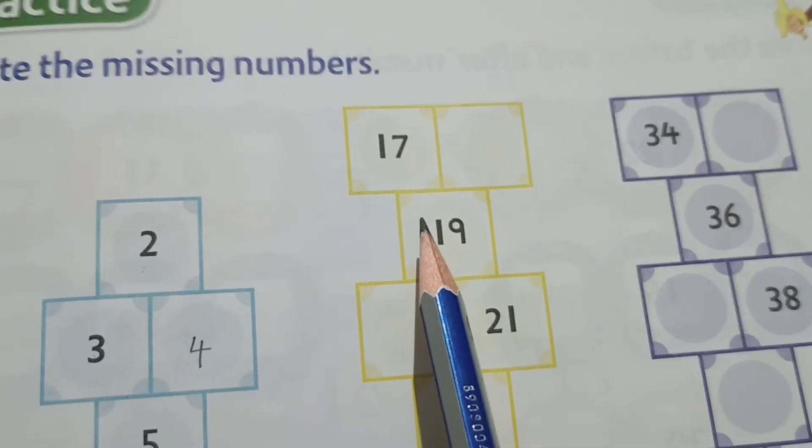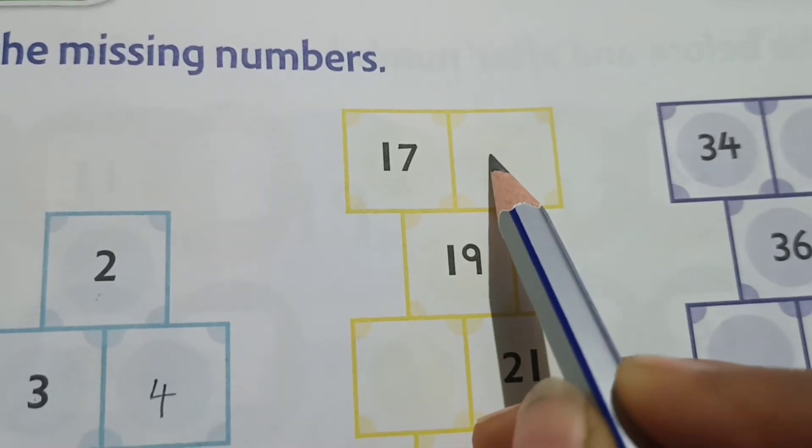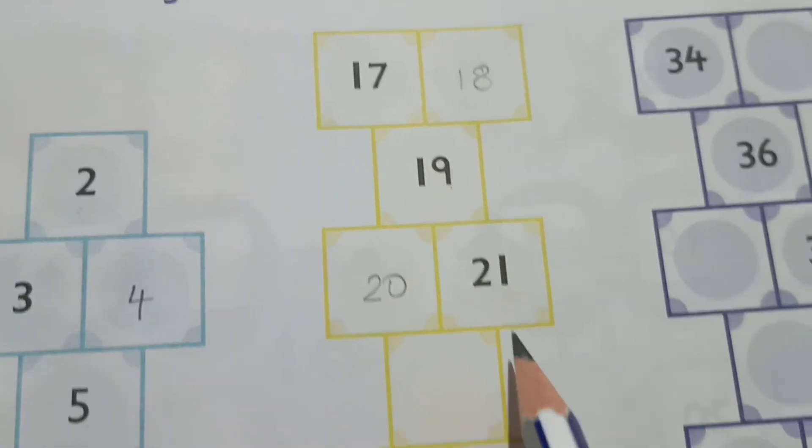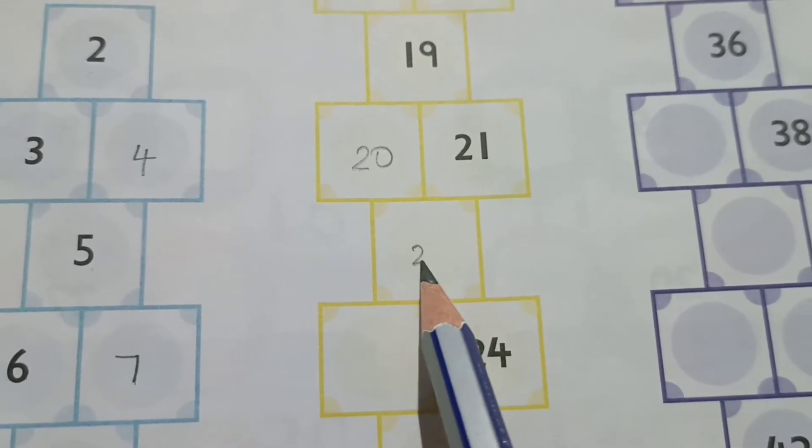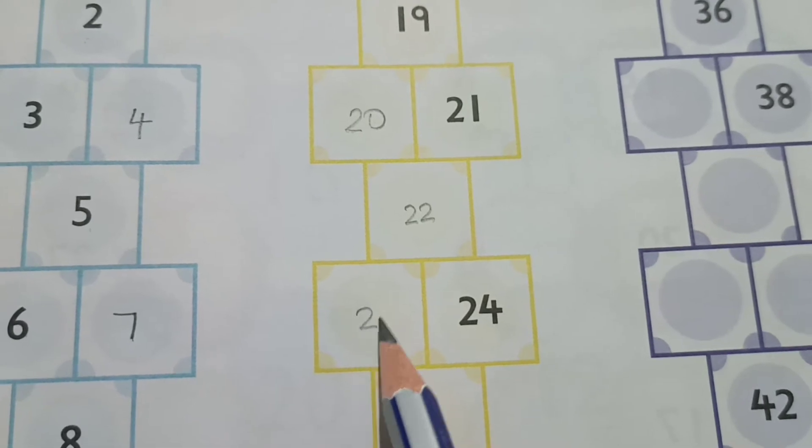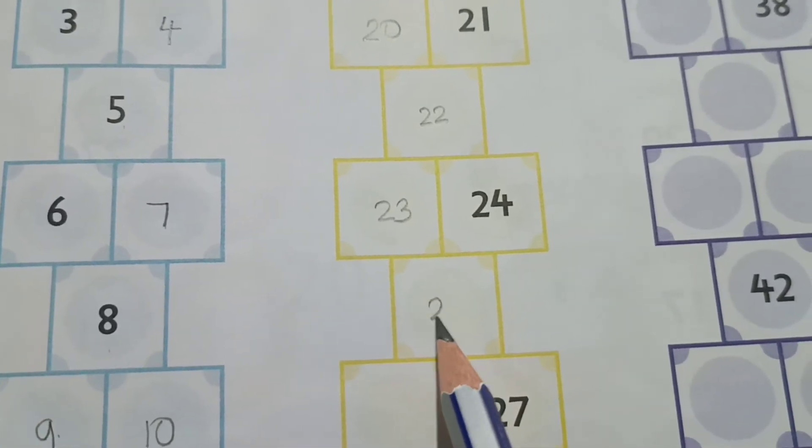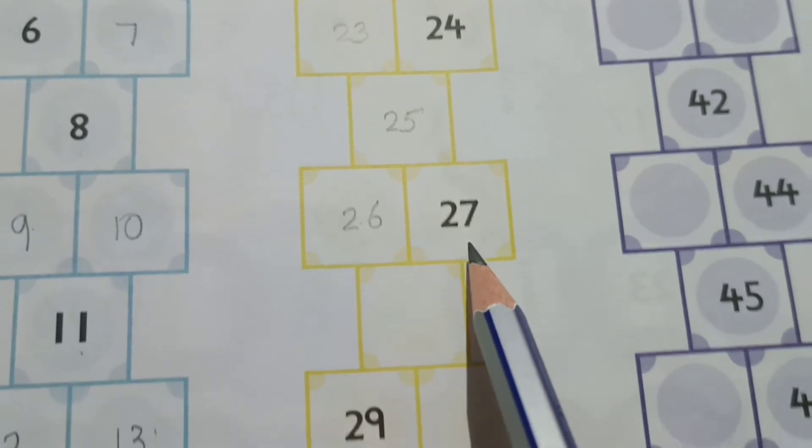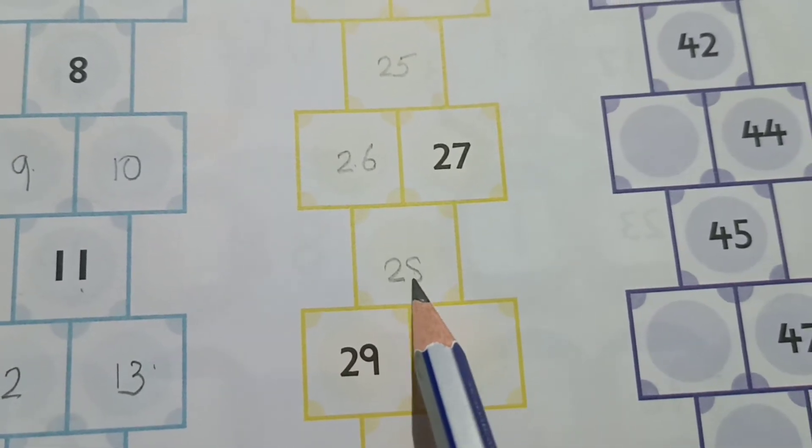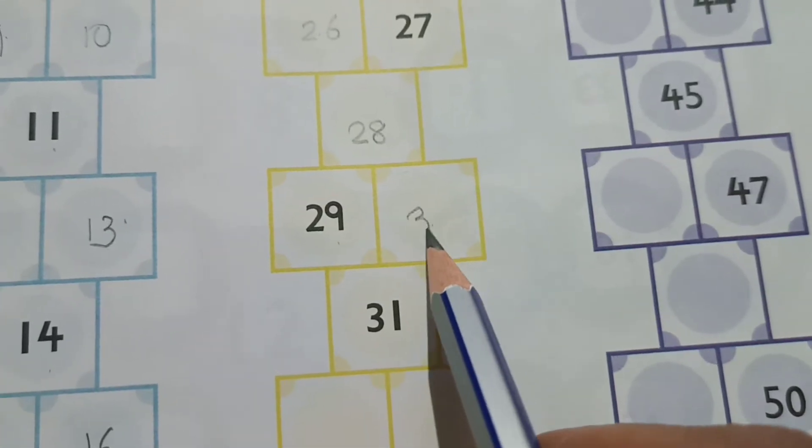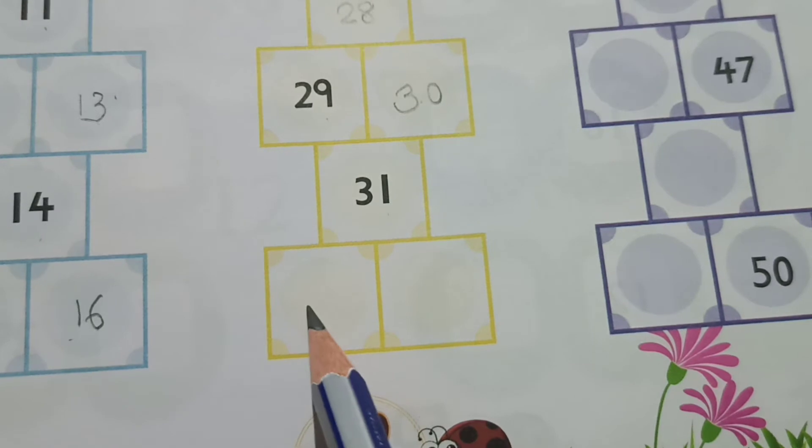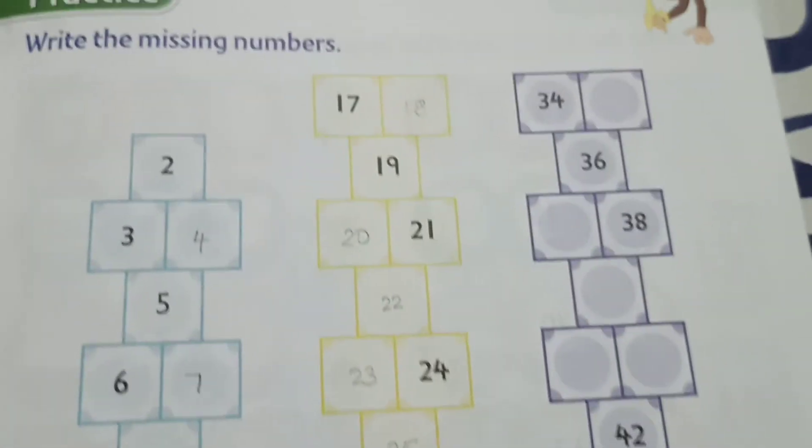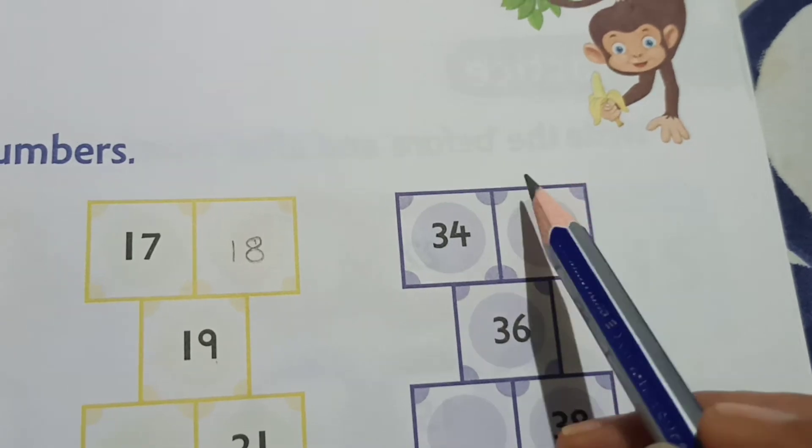Thirteen, fourteen, fifteen, sixteen. So these are the missing numbers. Next, see the next line here. What is this? Seventeen. Here we'll write eighteen, nineteen, twenty, twenty-one, twenty-two, twenty-three, twenty-four, twenty-five, twenty-six, twenty-seven. Twenty-eight, twenty-nine, thirty, thirty-one, thirty-two, thirty-three.